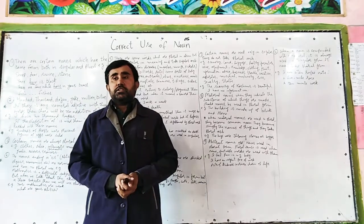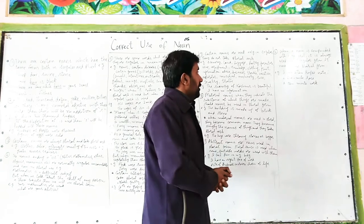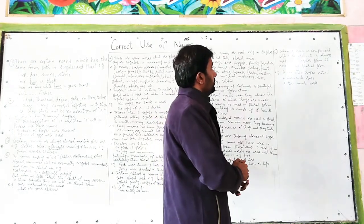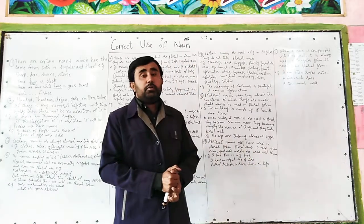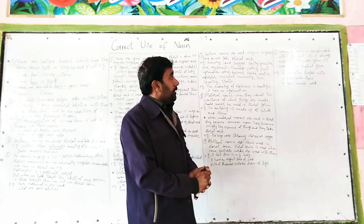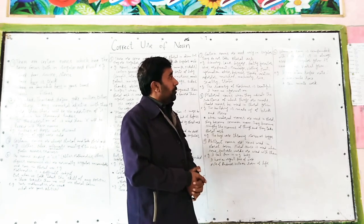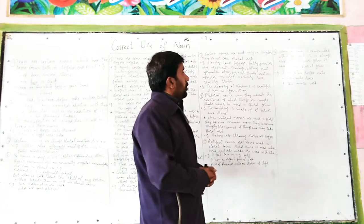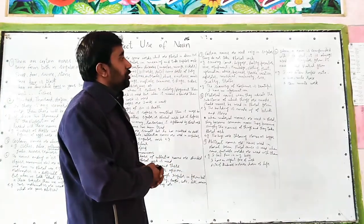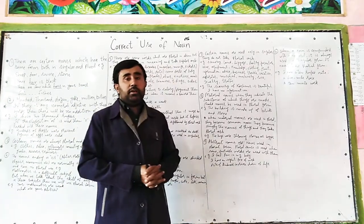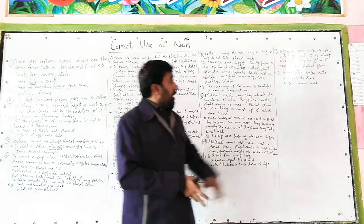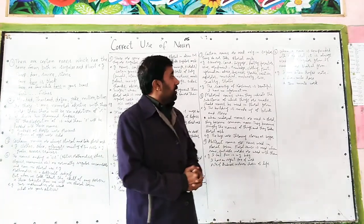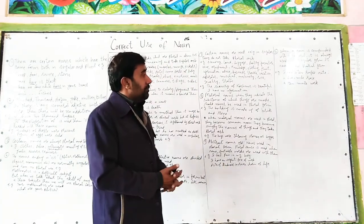When a noun is compounded with a numeral, it is always used in singular form and never takes plural form. For example: 'I have a ten-rupee note' — 'ten rupees note' is wrong. 'A five-mile race.' 'A ten-minute work.' The noun always stays singular when combined with a numeral adjective.